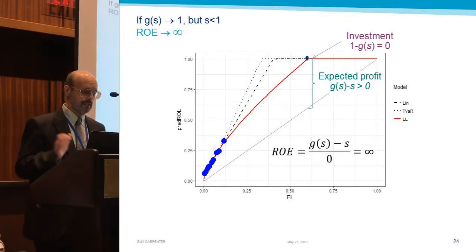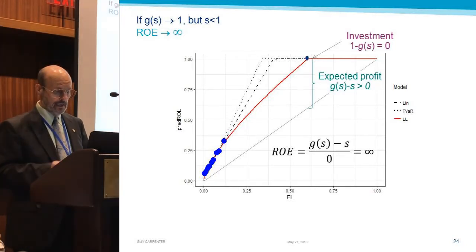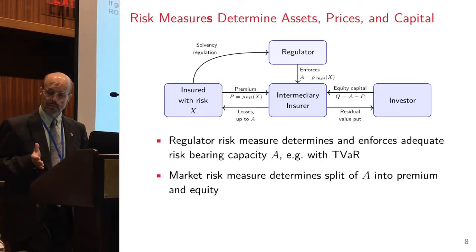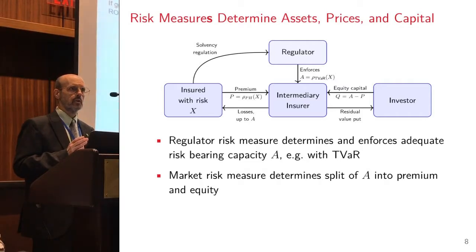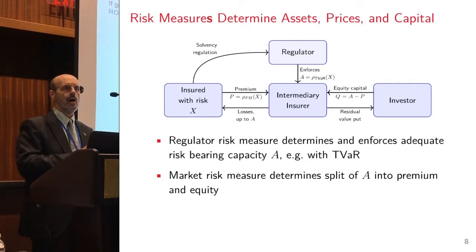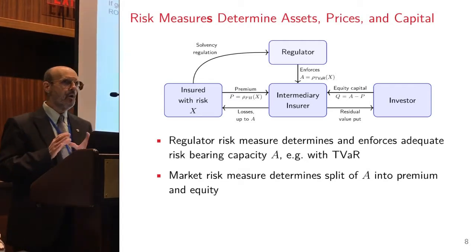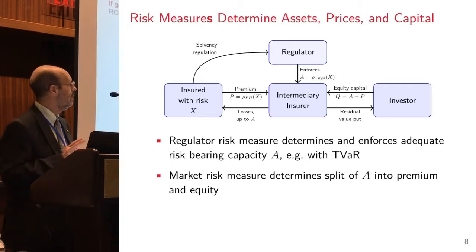I'm going to go off-script here for a minute — a little rant. Some points we made yesterday that I think need to be emphasized. Yesterday we saw that there are really two purposes for these risk measures: there's a regulatory-driven or solvency-driven purpose — how much money do we need backing these? — and the pricing purpose: how are these funds going to be divided between the policyholder contribution and the investor contribution. These are distinctly different questions.